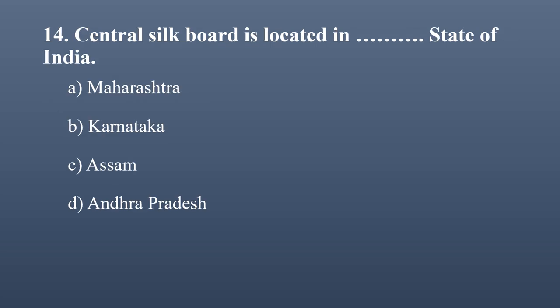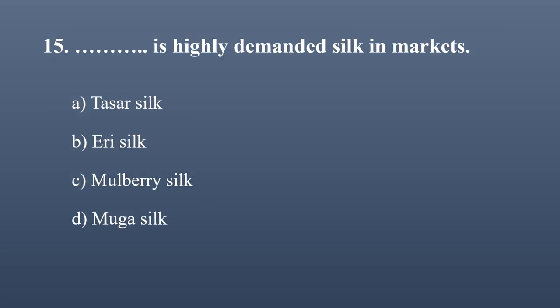Central Silk Board is located in which state of India? Options: Maharashtra, Karnataka, Assam, Andhra Pradesh. All these states are engaged in silk production, but the Central Silk Board is located in Bangalore city of Karnataka. The correct option is Karnataka.